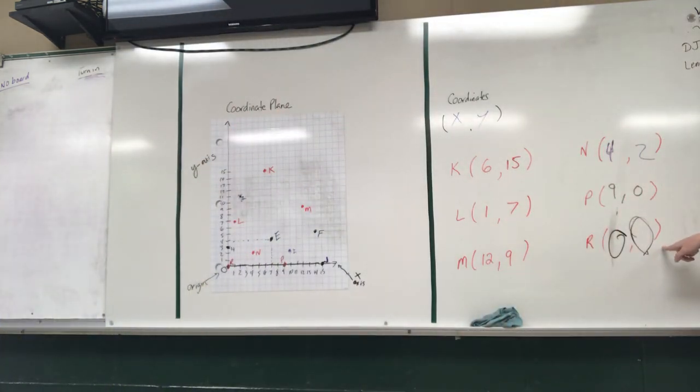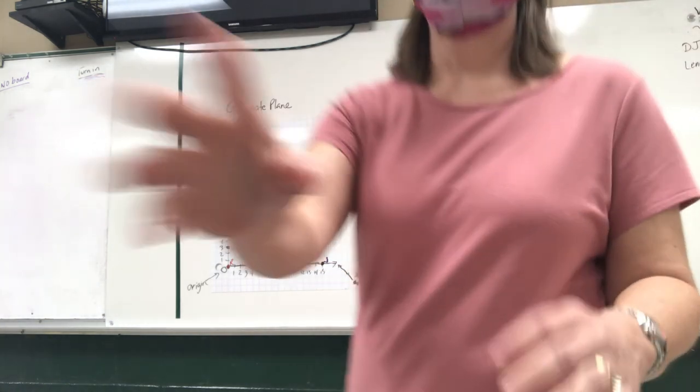Alright, what's another name for where point R is? Origin. Which is very good. This is also, I can say point R is at the origin. Or did you just say orange? Orange. No, I said origin. Because zero's the origin. I thought I said orange. Alright, any questions? No, ma'am. Okay? I have a question. Were you working on it yourselves?